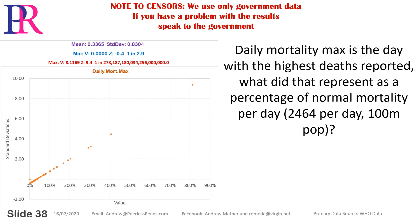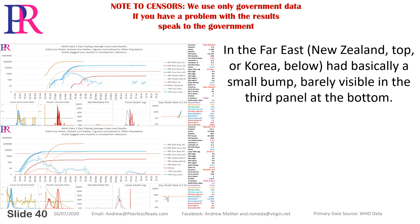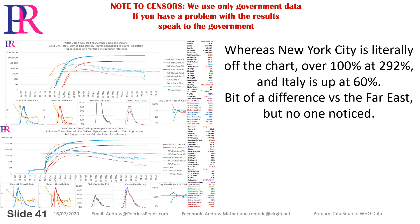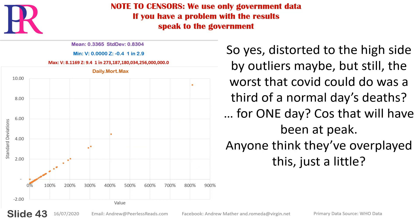Given that we didn't filter for small islands or governments correcting data with absurd spikes, I wouldn't lose sleep over the outliers — but they're worth bearing in mind. New Zealand (top) or Korea (below) have basically a small bump, barely visible in the bottom panel, whereas New York City is literally off the chart at 292%, and Italy is up at 60% — quite a difference versus the Far East, but no one noticed. The worst that COVID could do was a third of a normal day's deaths for one day, because that will have been a peak.